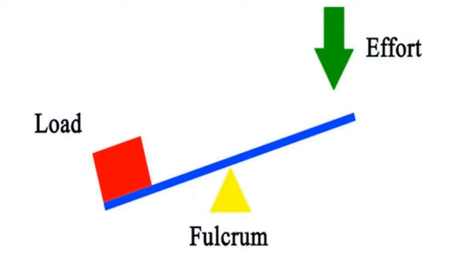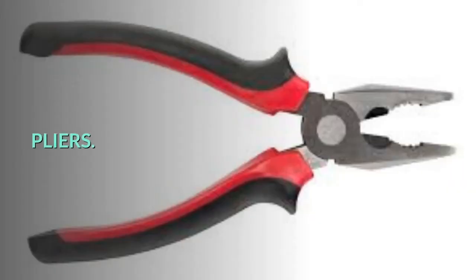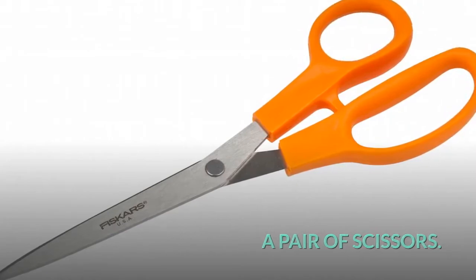A lever is a machine or any rigid bar which rotates about a fixed point called pivot or fulcrum. Examples of levers include seesaw, pliers, tweezers, a pair of scissors, and wheelbarrow.